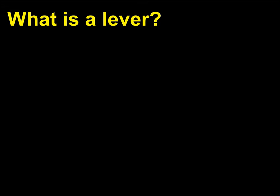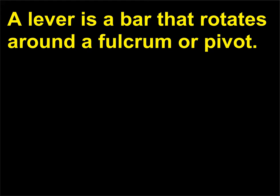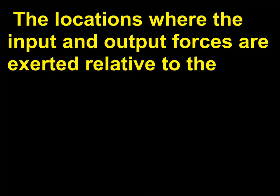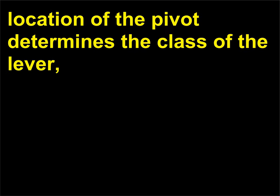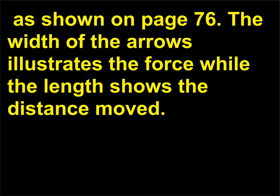What is a lever? A lever is a bar that rotates around a fulcrum or pivot. The locations where the input and output forces are exerted relative to the location of the pivot determines the class of the lever. As shown on page 76, the width of the arrows illustrates the force while the length shows the distance moved.